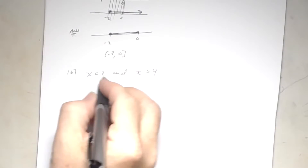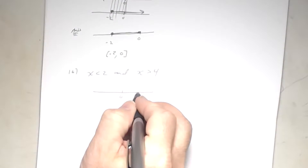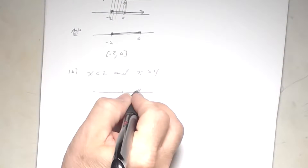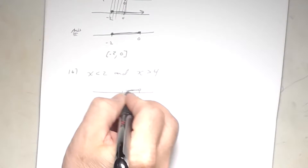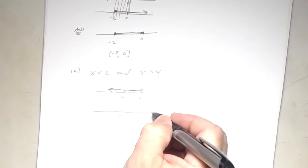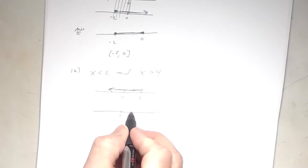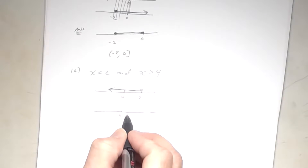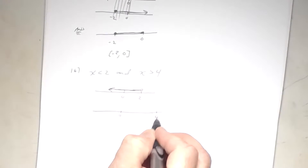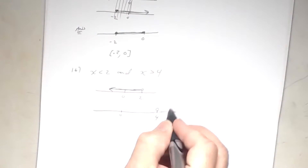For the first inequality, place zero and two on the number line. Use an open circle at two, shading to the left. For the second inequality, place four to the right of two — don't put four in the wrong place or it will mess up your solution. Use an open circle at four, shading to the right.